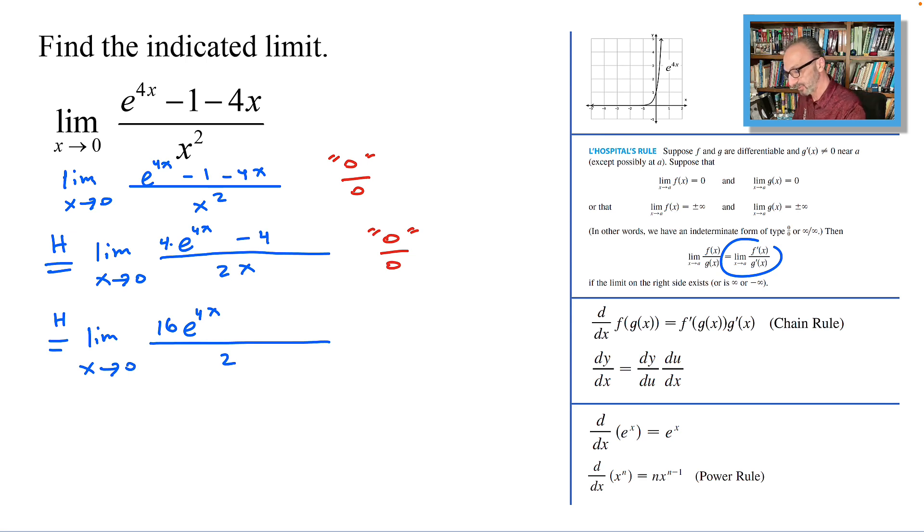This way we could save a step from writing and simplify between the 2 and the 16. Divide by 2 we get 1, divide 16 by 2 we get 8. So now it's a limit as x approaches 0.